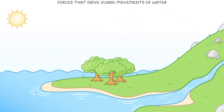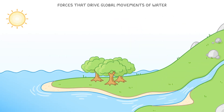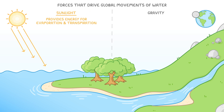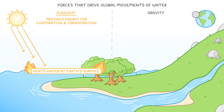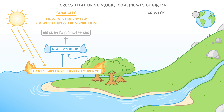Finally, let's examine the forces that drive these global movements of water around our planet. The entire water cycle is powered by two main forces: sunlight and gravity. Sunlight provides the energy needed for evaporation and transpiration, heating water at earth's surface and turning it into water vapor that then rises into the atmosphere.